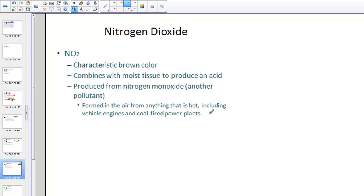Nitrous dioxide, NO2, has this characteristic brown color. It combines with moist tissues to produce an acid as well. So again, taking a look at the NO2 molecule dissolving into water, forming an acid, and this would be called nitric acid, HNO3. Nitric is an H. A very strong, strong acid. So again, all of these pollutants contribute to things such as acid rain and ocean acidification.